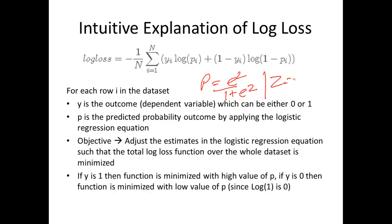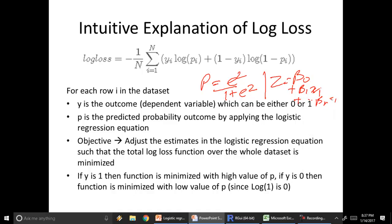Where z is the regression equation beta 0 plus beta 1 x1 all the way till beta n xn, where beta 0, beta 1, all the way beta n are the estimates that we want to generate and x1, x2, x3 till xn are the independent variables.